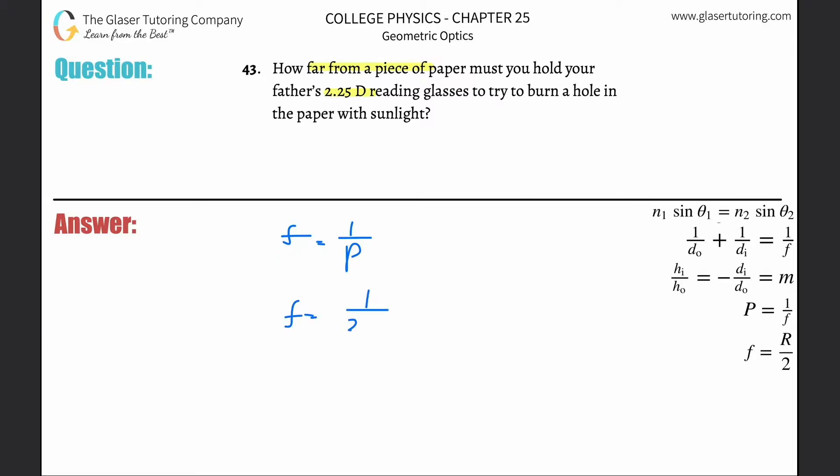Bada-bing, bada-boom, this is going to be 1 over 2.25. Those are the proper units for power diopters - it's just 1 over meter. So this is just 1 divided by 2.25. We've seen this already, and this works out to be a focal length of 0.444 meters.